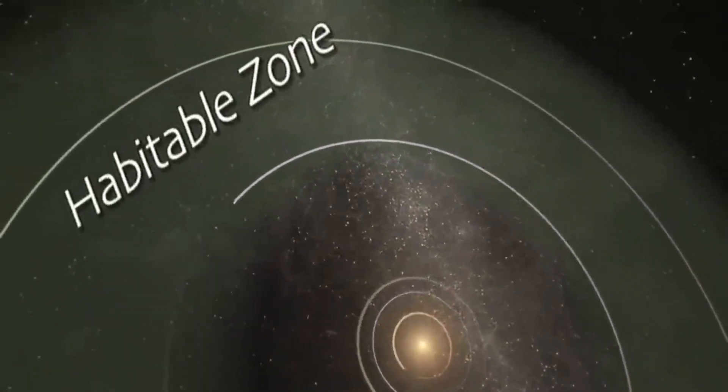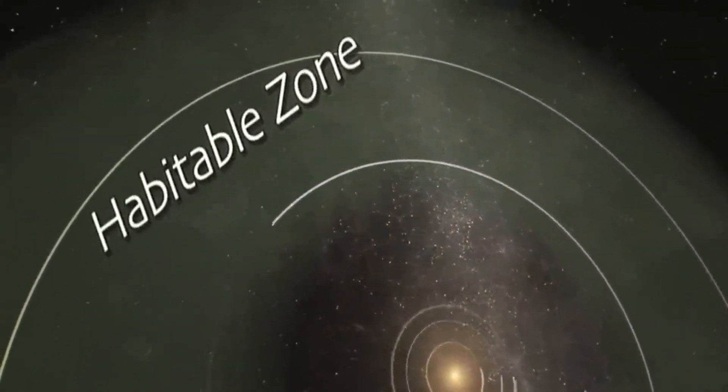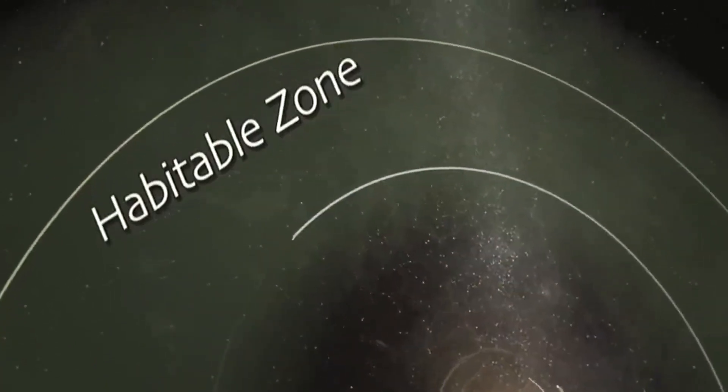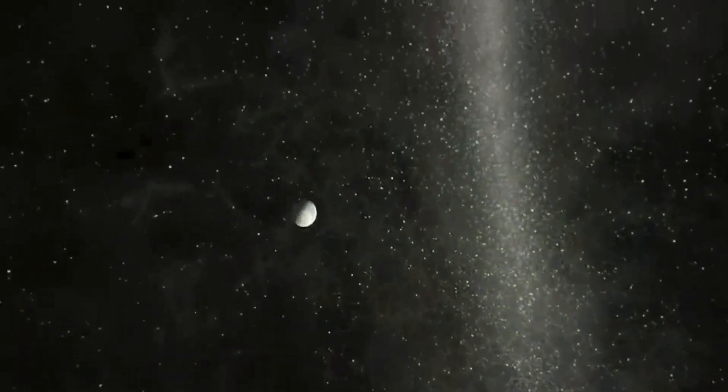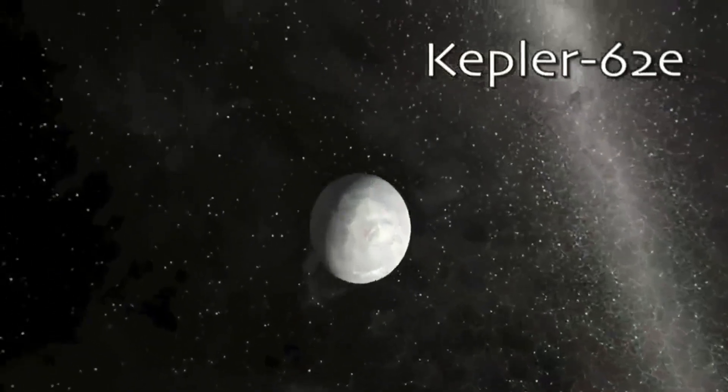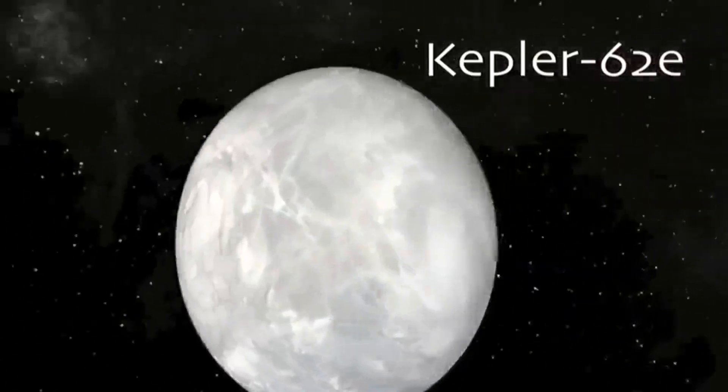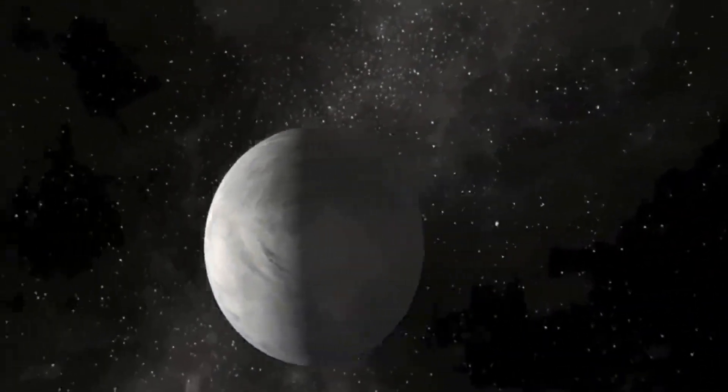Each of the two candidate water worlds could be entirely covered by a global ocean, according to astronomers' computer models. Orbiting once every 122 Earth days, Kepler-62e could be tropical, humid and hot, with a very cloudy atmosphere. It's perhaps 60% bigger than Earth.